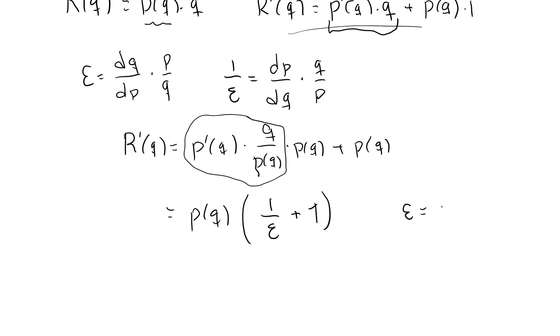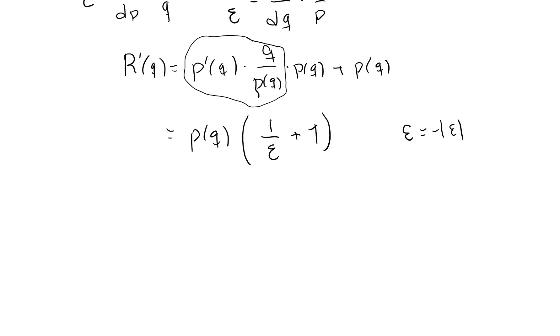Again, let's replace epsilon with minus the absolute value of epsilon. It just makes it easier to remember that this is indeed a negative number. And then we have P of Q multiplied by one minus one over the absolute value of epsilon.